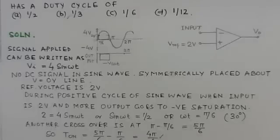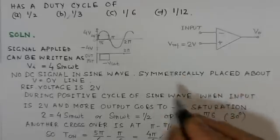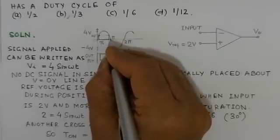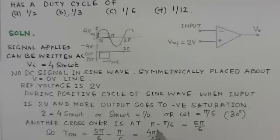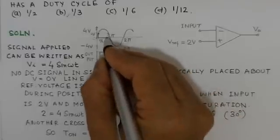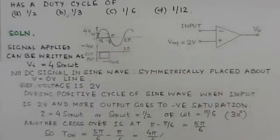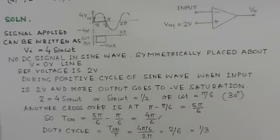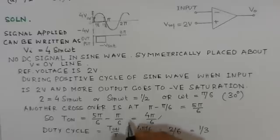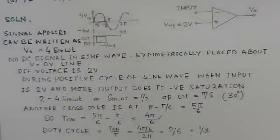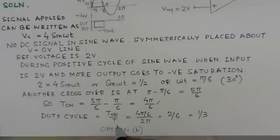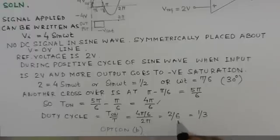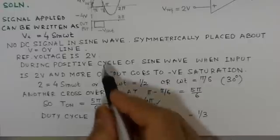The second crossover point is at 5π/6. The on time of the pulse is 5π/6 - π/6 = 4π/6. This equals 2π/3, which is 1/3.